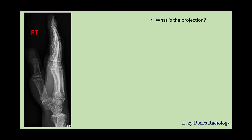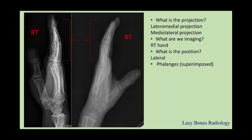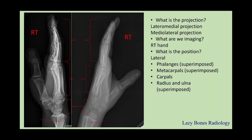Let's practice. What is this projection? This is a lateralmedial projection. As you can see here, the thumb is more magnified because it's closer to the central ray, while in the mediolateral projection the thumb is further away — more to the anatomical side. Do you see the difference? So what are we imaging? This is a right hand. What is the position? Lateral — so phalanges are superimposed, metacarpals are superimposed, next is the carpal group, and finally the radius and ulna are superimposed, or stacked on top of each other.